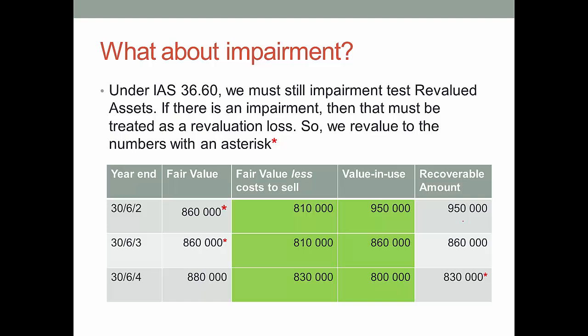Now we've talked about revaluation in a simple situation without a depreciating asset, focusing on the equity effect - to what extent is profit affected, to what extent is other comprehensive income affected. I did mention at the outset that we still need to think about impairment for revalued assets. Under IAS 36, paragraph 60, we still have to impairment test if there are indications of impairment for any revalued assets. Under paragraph 60 of IAS 36, if there is an impairment, we're required to treat that impairment as a revaluation loss.